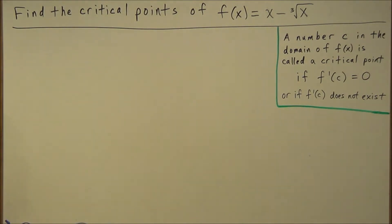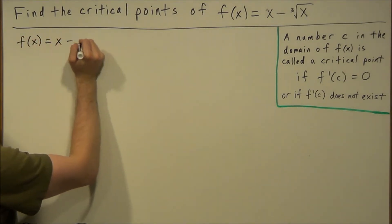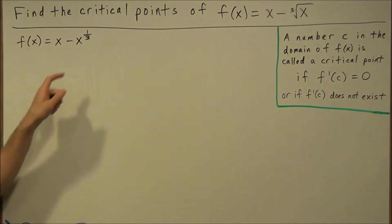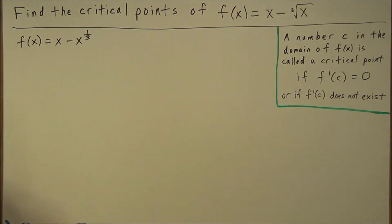To get this problem started, we're going to write this as f(x) equals x minus x to the one-third power. The reason why we want to write this as x to the one-third is so that we could use power rule when we take the derivative in a moment.